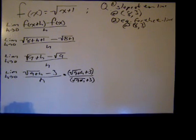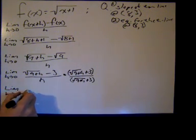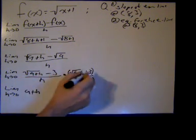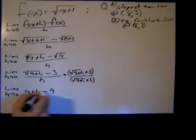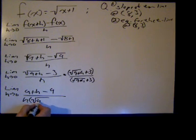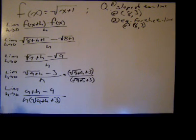And then we multiply through the numerator, and we get the limit as h goes to 0. Square root times the square root is just 9+h. Negative 3 times positive 3 is negative 9. Then we get h. Don't expand the denominator. Wouldn't get much anyway if you did.